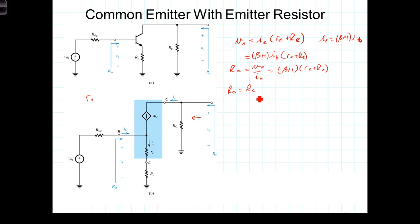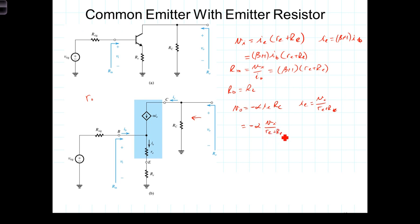Now let's calculate the open circuit voltage gain A_V. V_out is equal to negative alpha times I_E times R_C. Noting that I_E equals V_in divided by (r_E + R_E), we get that V_out equals negative alpha times V_in divided by (r_E + R_E). So the open circuit gain A_V0 equals V_out over V_in, which equals negative alpha times R_C over (r_E + R_E).